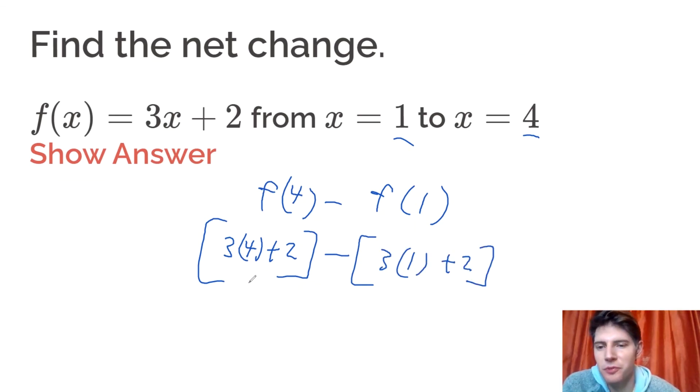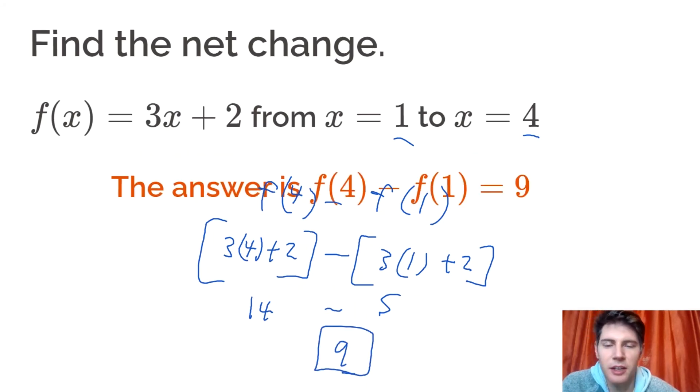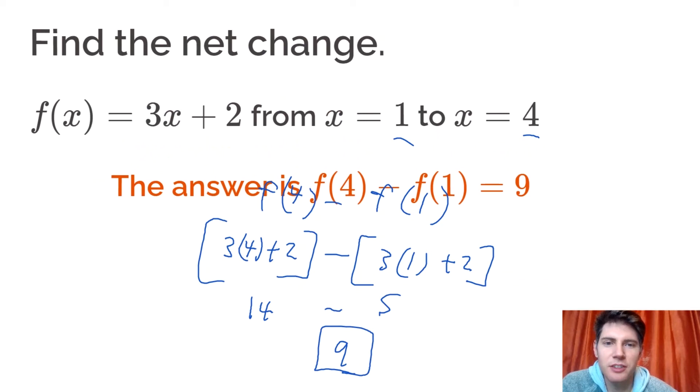3 times 4 is 12 plus 2 is 14 minus. And 3 times 1 is 3 plus 2 is 5. So 14 minus 5 is 9. And we can check it. And the answer is 9. So that's how to do these net change problems.